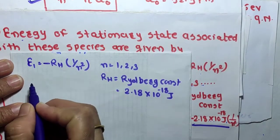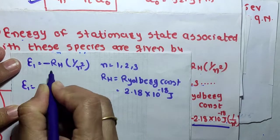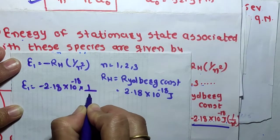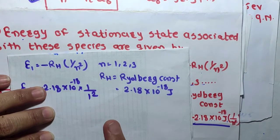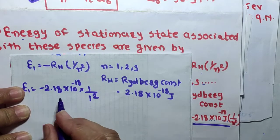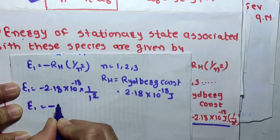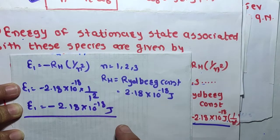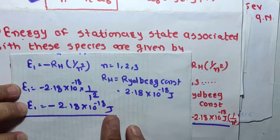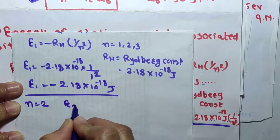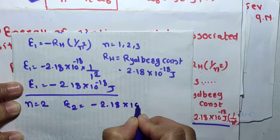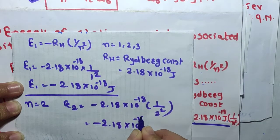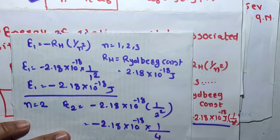For n = 1, E1 = −2.18 × 10⁻¹⁸ × (1/1²) = −2.18 × 10⁻¹⁸ J. The lowest energy state is called the ground state because n = 1 is the ground state. For n = 2, E2 = −2.18 × 10⁻¹⁸ × (1/4).